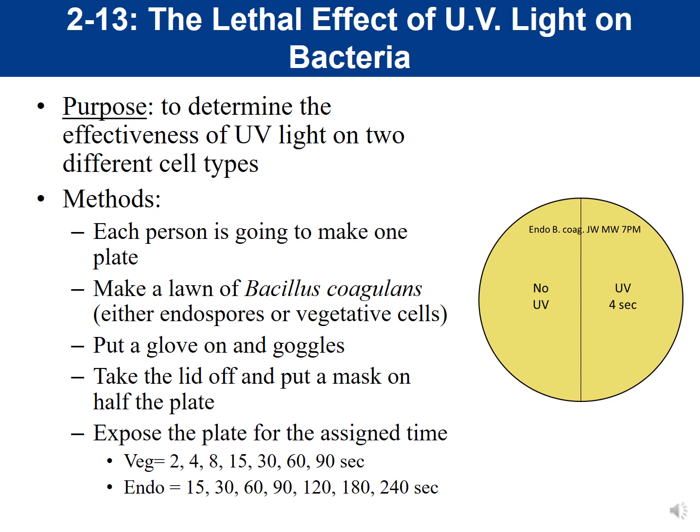Endospores are a structure that some bacteria produce in response to harsh conditions, primarily found in the Bacillus and Clostridium genera. The endospore is a structure made of keratin, produced in response to harsh conditions, and it allows bacteria to wait out until conditions become favorable. That's in comparison to vegetative cells, which are metabolically active. We want to see in this experiment if endospores or vegetative cells are more resistant to UV light.